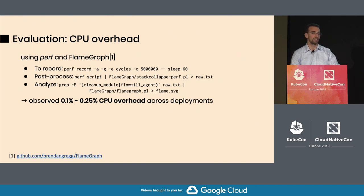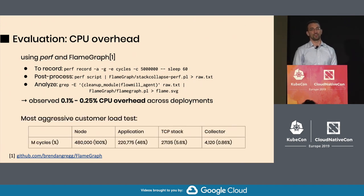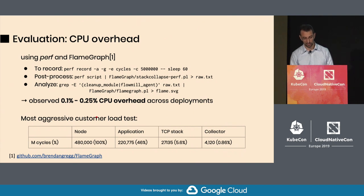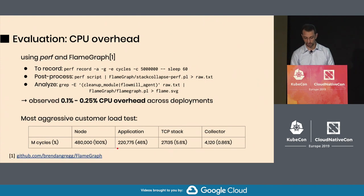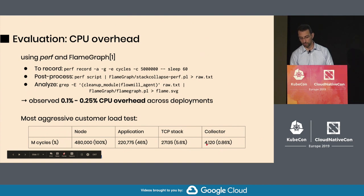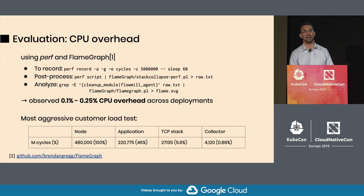What we've seen is the collector has 0.1 to 0.25% per-core CPU overhead across many deployments. We do keep track of the highest overhead we've ever seen. We've had one customer run a very aggressive load test - their application worked at 46% CPU, which is very high for them. With that application, our collector ran with less than 1%, at 0.86% CPU overhead. So this is the highest we've seen.